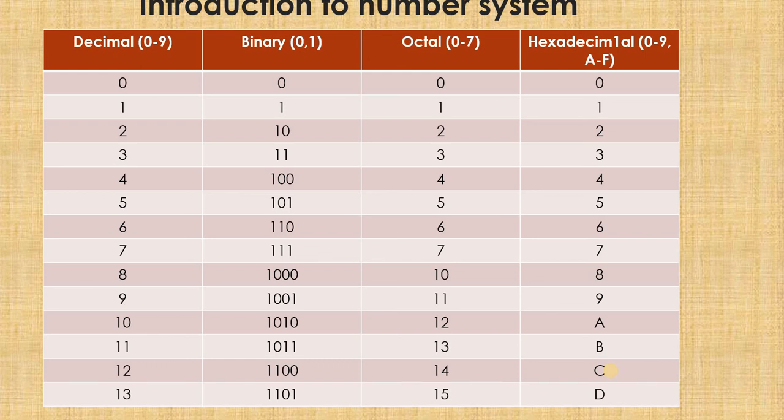It would be a good exercise if you try writing these numbers, 0 to at least 30 numbers. Try representing in all the ways: decimal number system, binary number system, octal number system, and hexadecimal number systems. Think of this as an assignment and try completing the table till 30 decimal numbers.